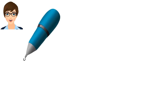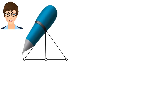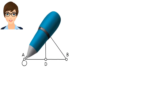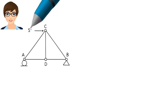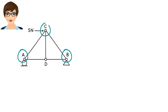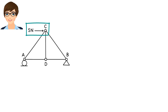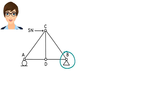Here is a simple truss structure with five members. The frictionless joints of the truss are labeled A, B, C, and D. The truss is subjected to a horizontal force of five newtons at joint C. The entire structure rests on a pin support at B and a roller support at A.